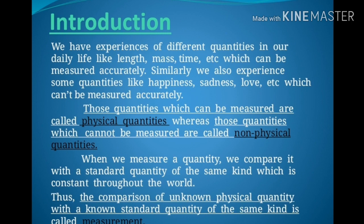In our daily life we experience different quantities. Some of them are measurable whereas some of them are not. Some quantities like length, mass, and time are measured accurately, and these quantities which are measured accurately are termed as physical quantities. Whereas those quantities which cannot be measured accurately but can be felt are called non-physical quantities.